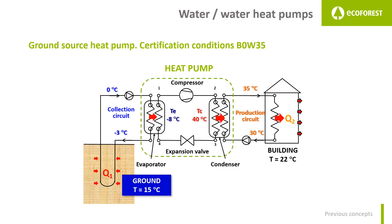As per the diagram, all that is within the green dotted line is the heat pump itself. The main components of a heat pump are the compressor, evaporator, condenser, and expansion valve. We will explain how a heat pump works in direct operation. To the left of the heat pump is the collection circuit, which is the circuit from which energy is extracted to evaporate the refrigerant in the evaporator. This evaporated refrigerant is driven into the compressor, which compresses it and increases its temperature and pressure.